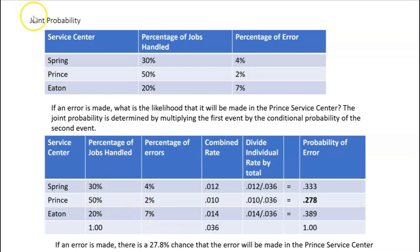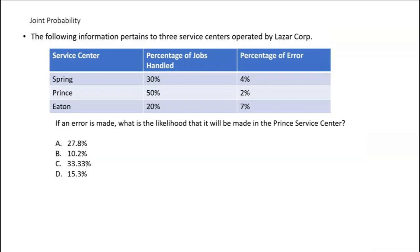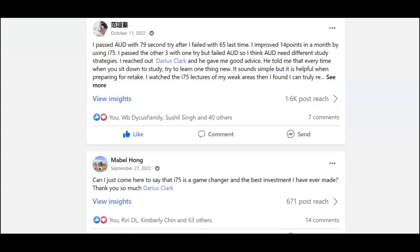They asked about Prince — in fact, it was a multiple choice question: if an error is made, what's the likelihood it'll be made in the Prince service center? Now we know the answer is 27.8%, letter A. Get yourself on i-75 with me, Darius Clark, where the right teacher makes all the difference.